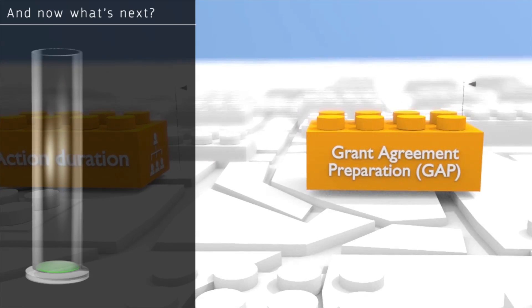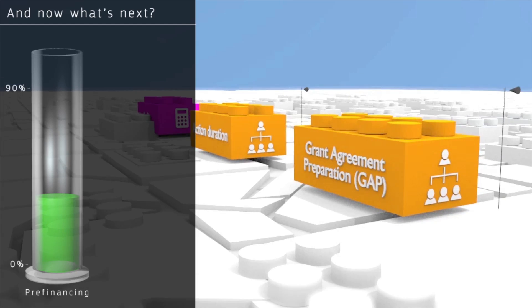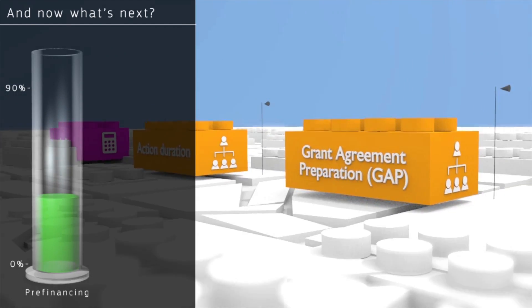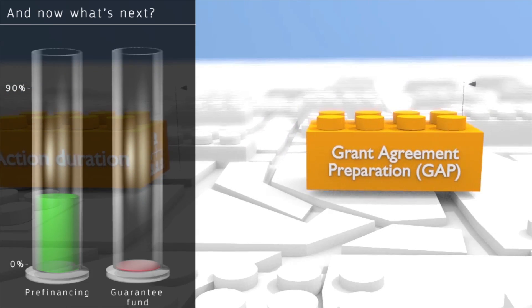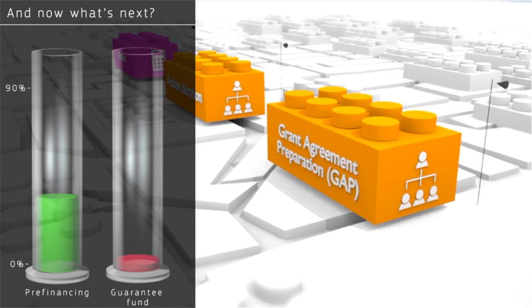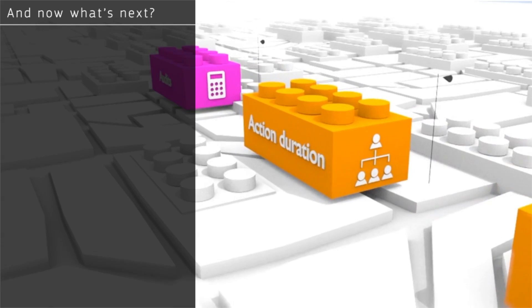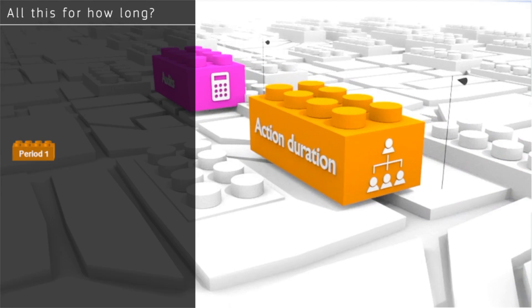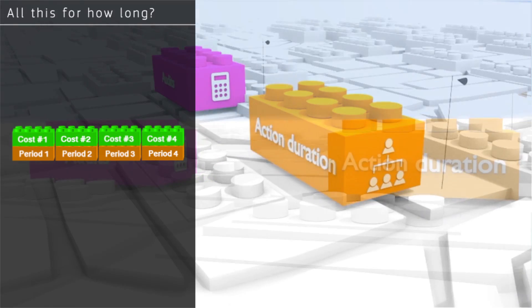The project is then underway. It starts with a pre-financing payment by the EU to the consortium to cover their start-up costs. A small percentage of the grant is placed in a guarantee fund to offset losses caused in the event of a participant becoming insolvent during a project. The duration of the project is divided into several periods specified in the grant agreement, and at the end of each period, the consortium submits a report to the project officer with results and costs incurred.